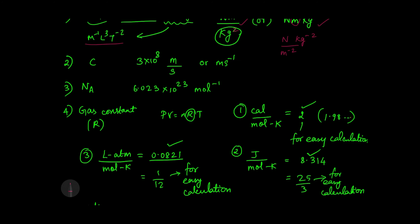Next, velocity of light is represented by the letter C, and its value is 3 × 10 power 8 meters per second.